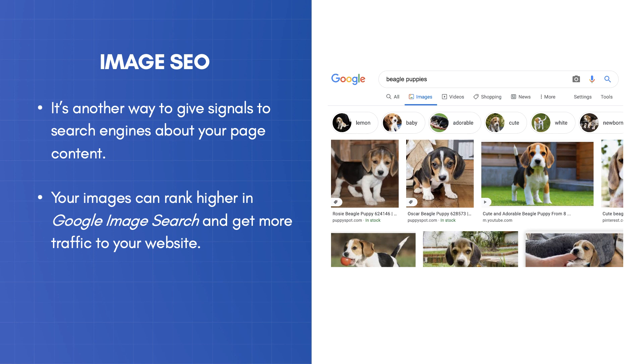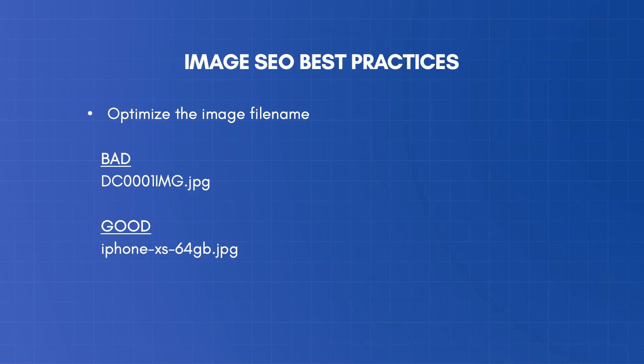Now let's see how to best optimize your images for search engines. The name of the image is the first thing to optimize, even before uploading the image to your website. Image file names should be informative and accurately describe the image. When you purchase an image or take a photo using your phone, they usually have names that do not make any sense. Instead, you should rename your image to a more meaningful name that is representative of the image.